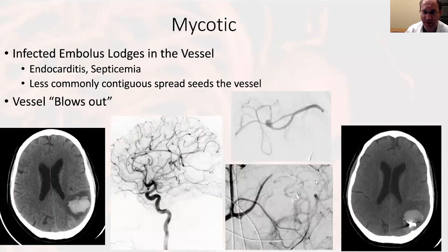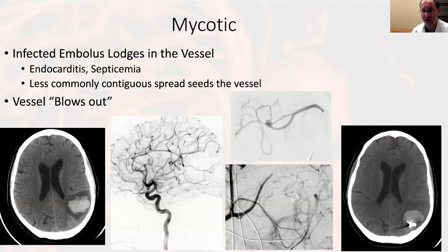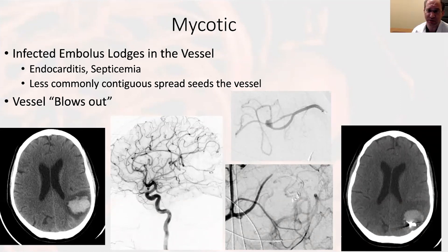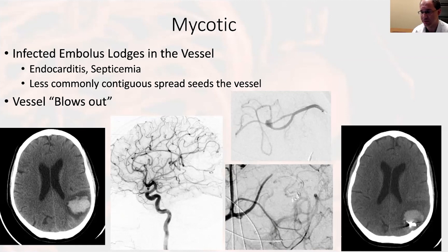Mycotic aneurysms are infectious aneurysms that can occur anywhere, including in the cerebral vasculature. Typically, an infected embolus lodges in the blood vessel — usually in the setting of endocarditis or septicemia — and as the infection takes root, the blood vessel can blow out and become an aneurysm and rupture. Less commonly, in the setting of meningitis or with arteries adjacent to the sphenoid sinus, direct contiguous spread of infection can cause a mycotic pseudoaneurysm.